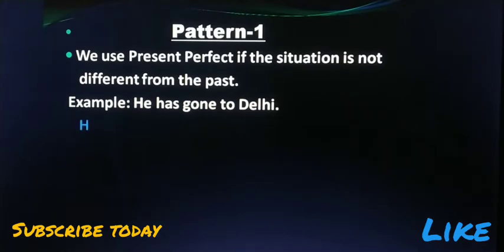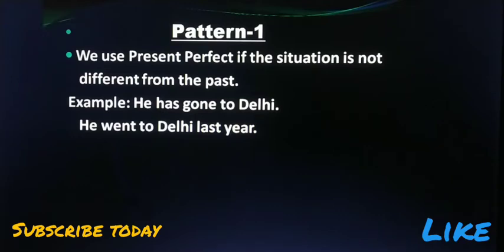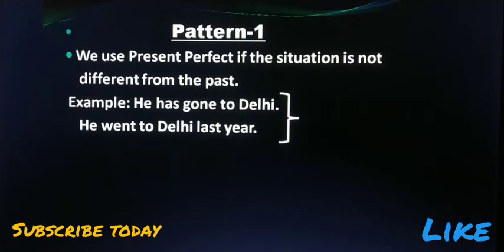Examples: 'He has gone to Delhi' versus 'He went to Delhi last year.' The phrase 'last year' indicates a completed past event, and it is possible that he has since returned. In the first case, 'he has gone to Delhi,' the effect is still on — he has not yet returned, he is still in Delhi. So we use present perfect tense in that case and simple past in the second case, meaning he went and came back.